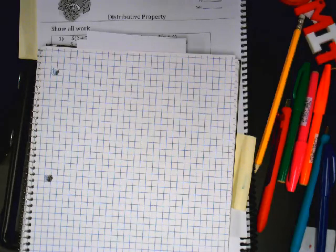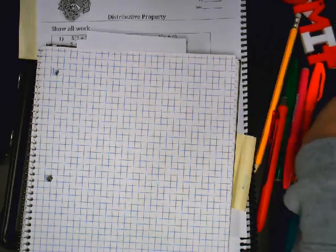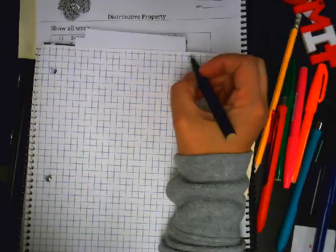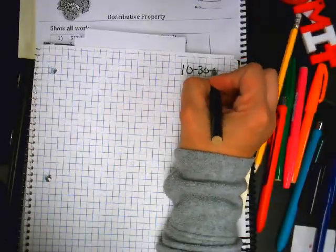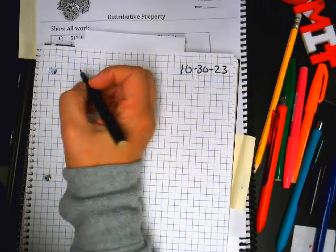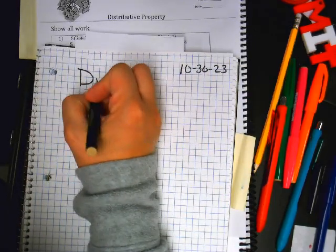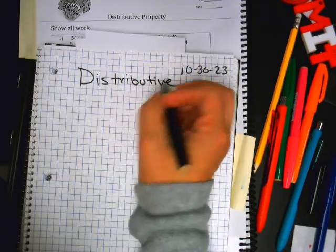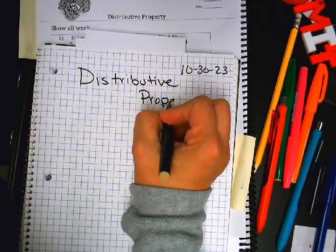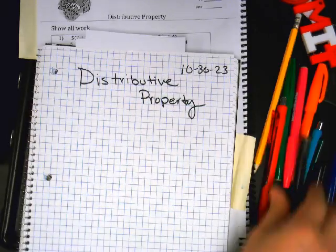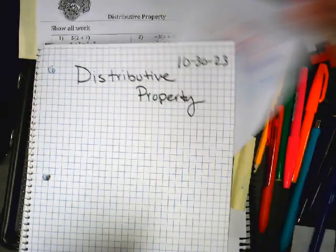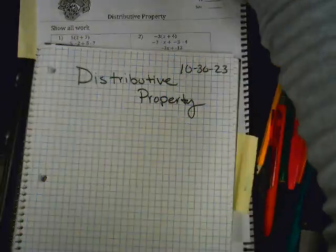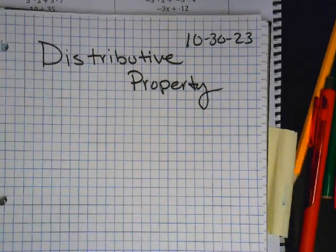Today is 10-30-23, and we're going to learn about the distributive property. Last week was order of operations. This week is distributive property. Here's hoping I make it to the whole week.